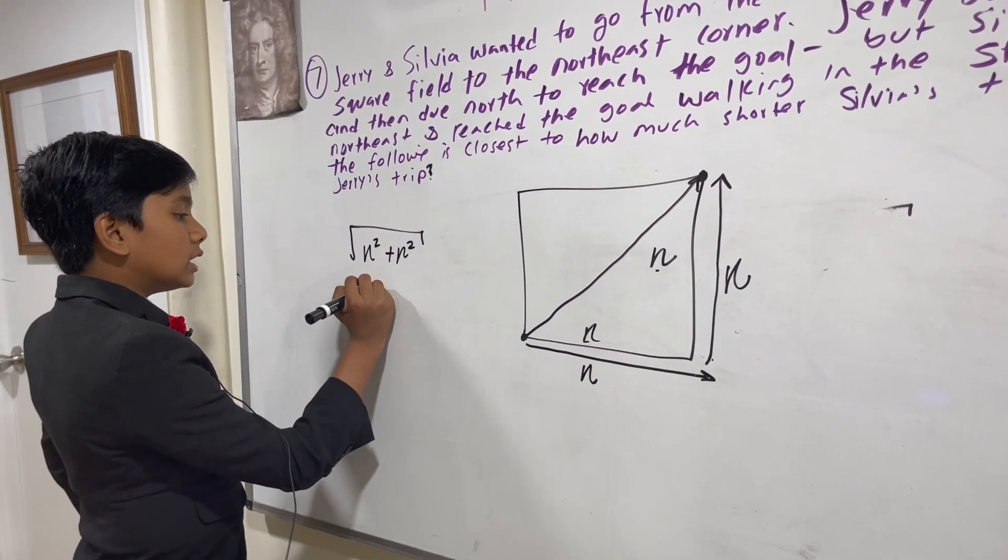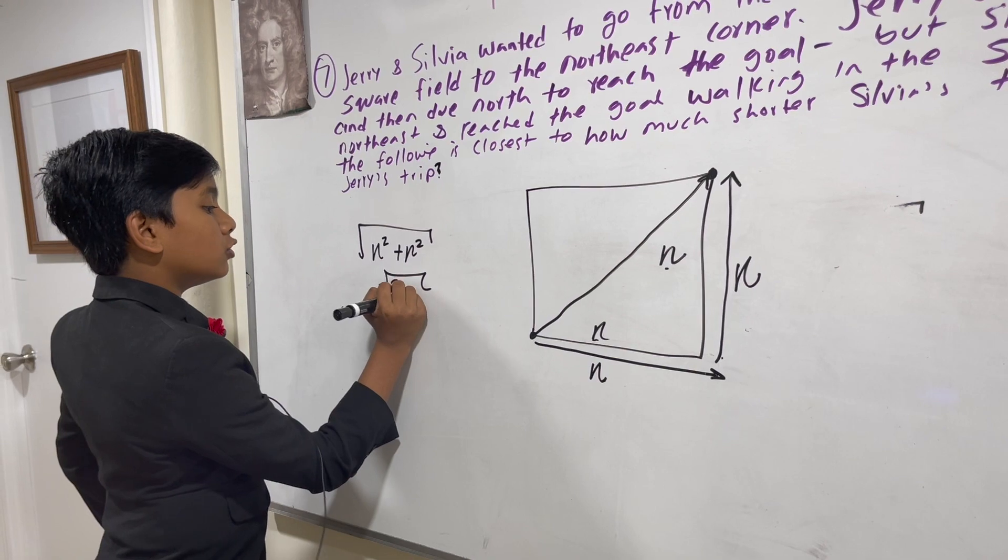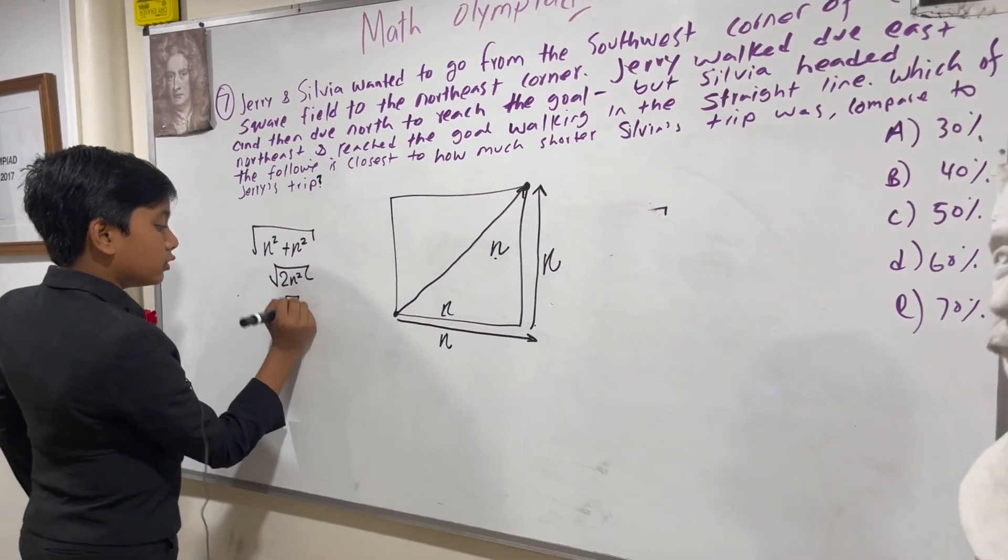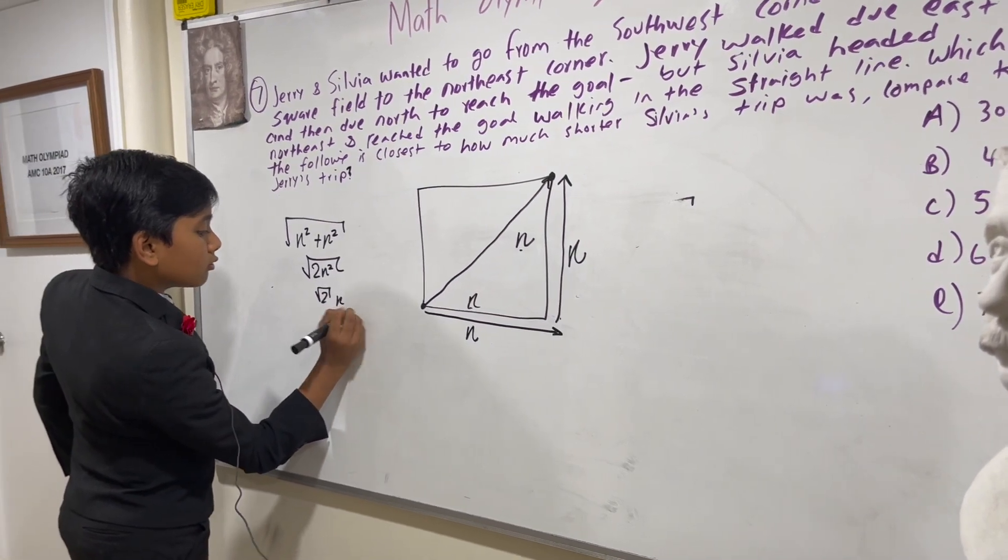we're going to square root it, so that gives us the square root of 2N squared, which is the square root of 2 times N, or N root 2.